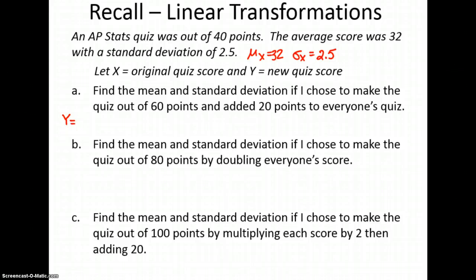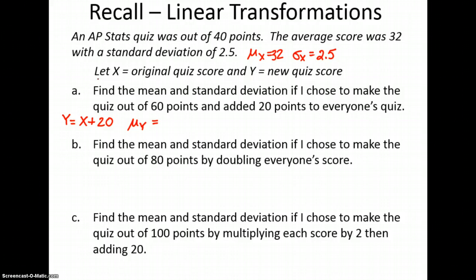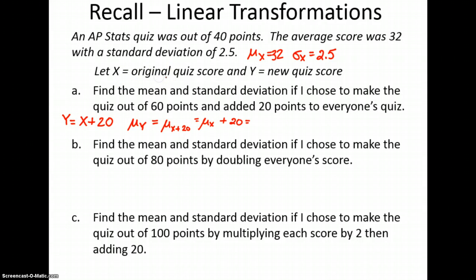Our new random variable Y is going to be each quiz score plus 20 points. We need to find the mean of Y. If you remember from the beginning of the year, we talked about adding to individual pieces would change the mean also by that much. So the mean of X plus 20 is going to be the mean of X plus 20, which is 32 plus 20, which is 52.